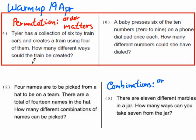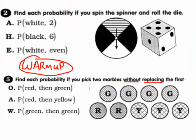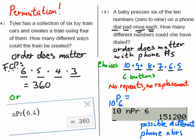So there are two permutation warm-up questions, and then some more warm-up questions — some dependent and independent probabilities. That'll pretty much cover all of what we did last week during the snowstorm and during the extended Easter break.